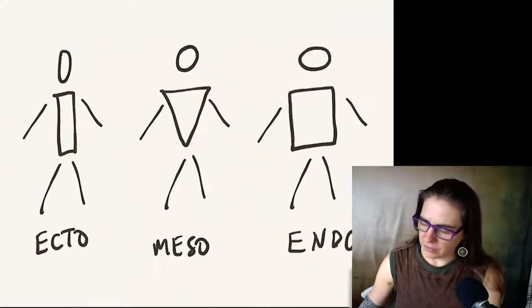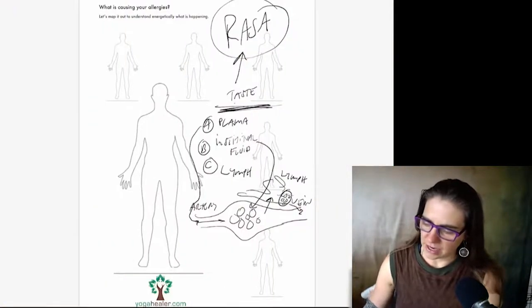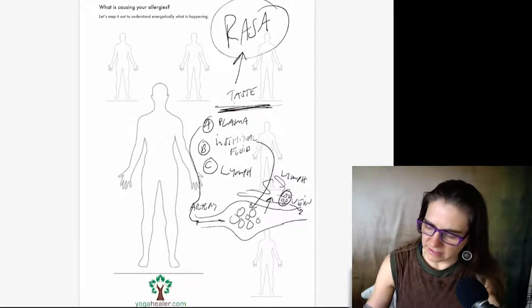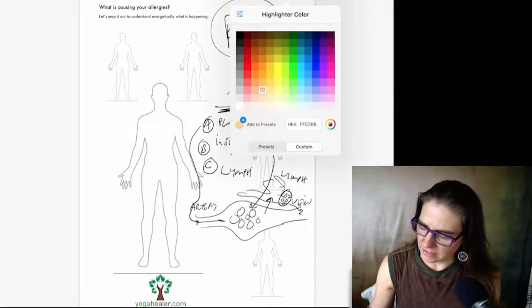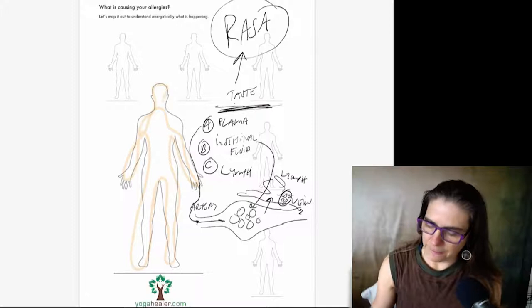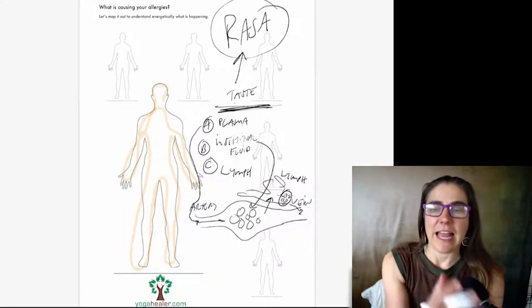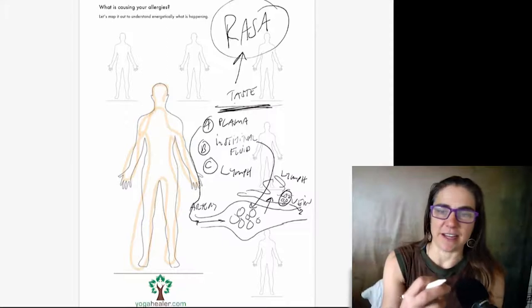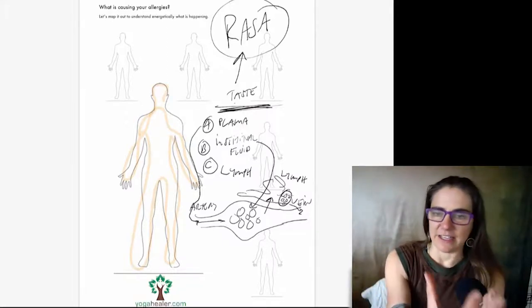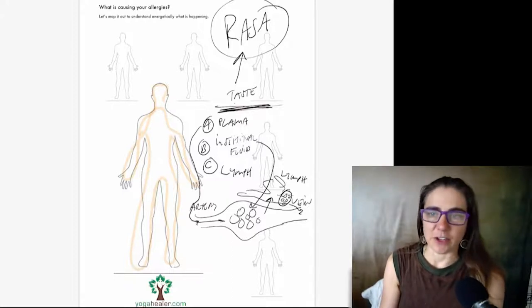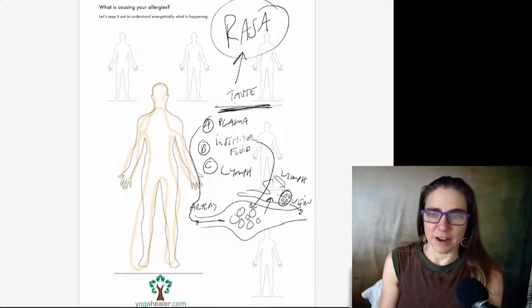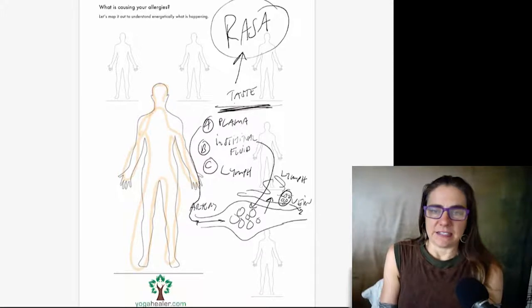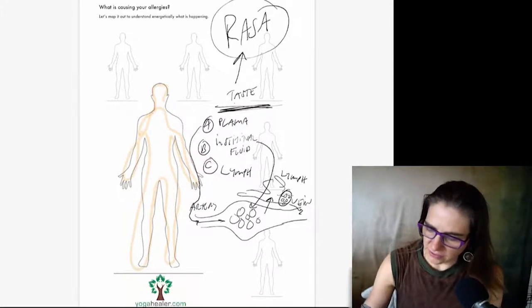But one thing leads to another. And in Ayurveda, we can understand how one thing leads to another step by step. In the last video, we talked about how there's a system of liquidity in the body that we call Rasa Dhatu. So if we see there's constipation, I'm going to draw this in.